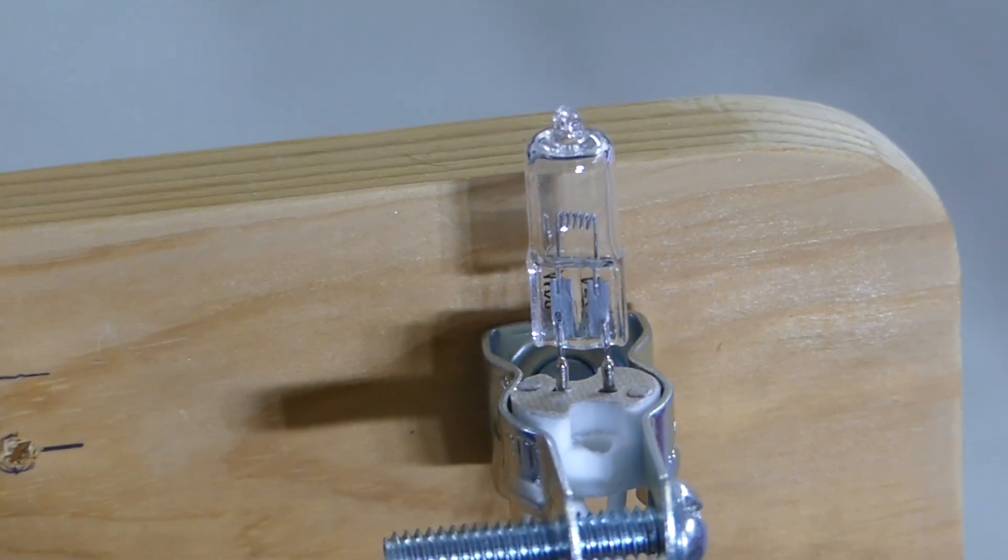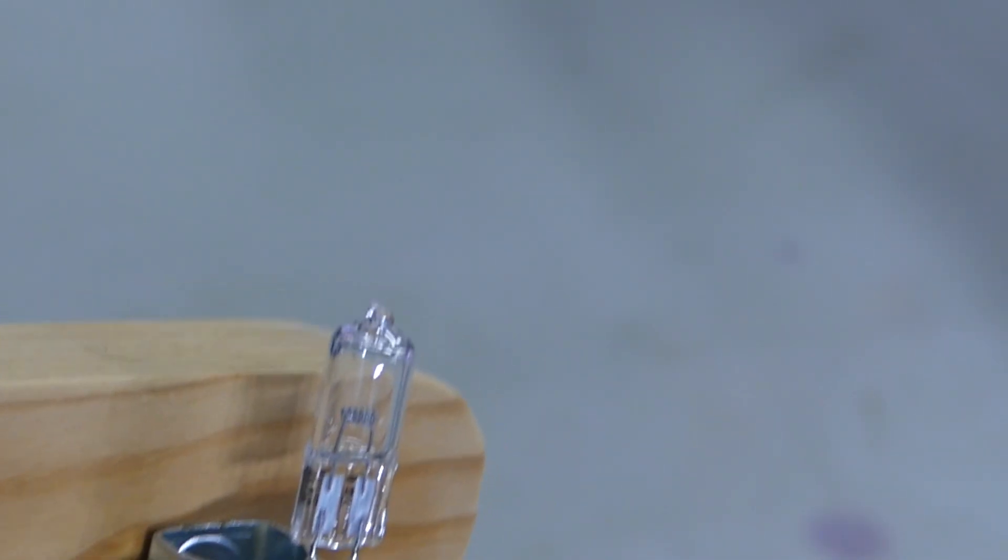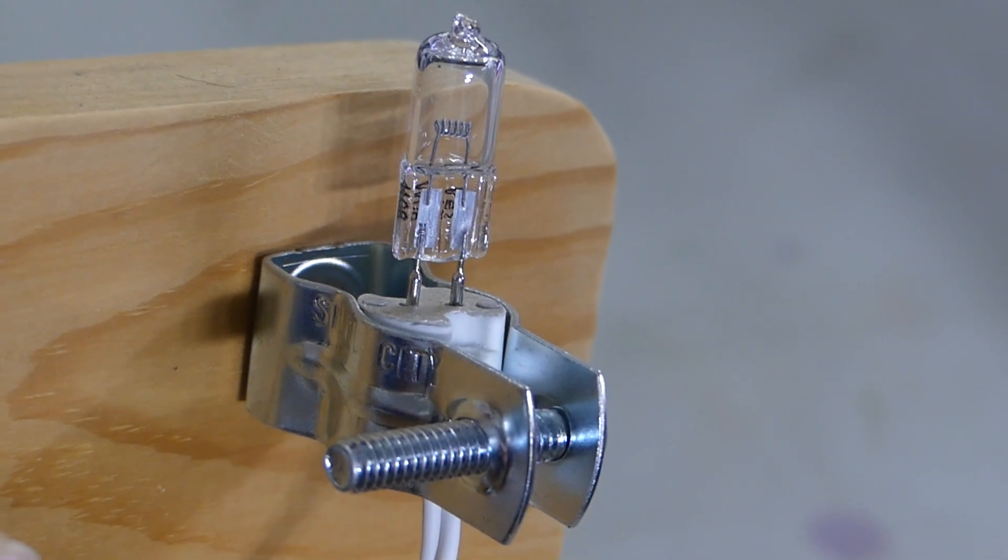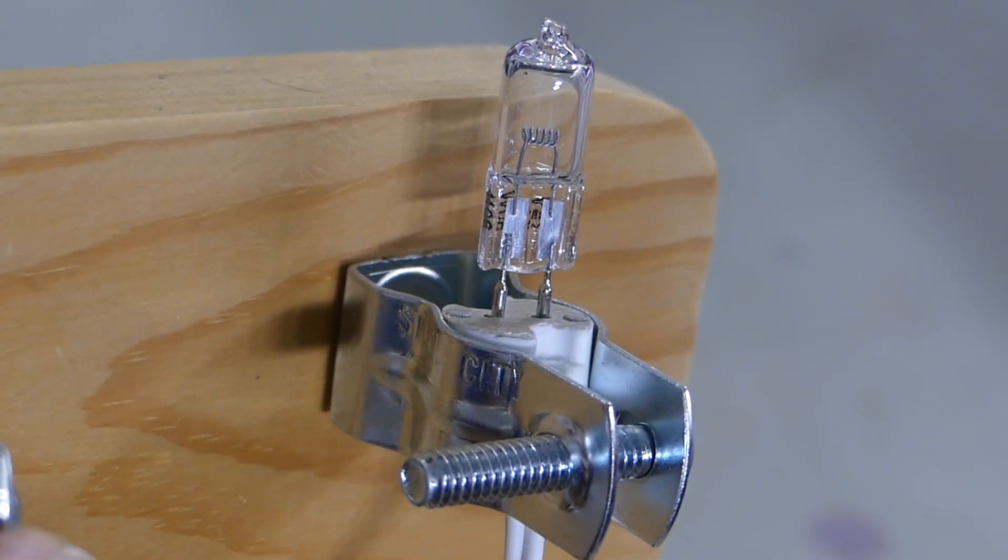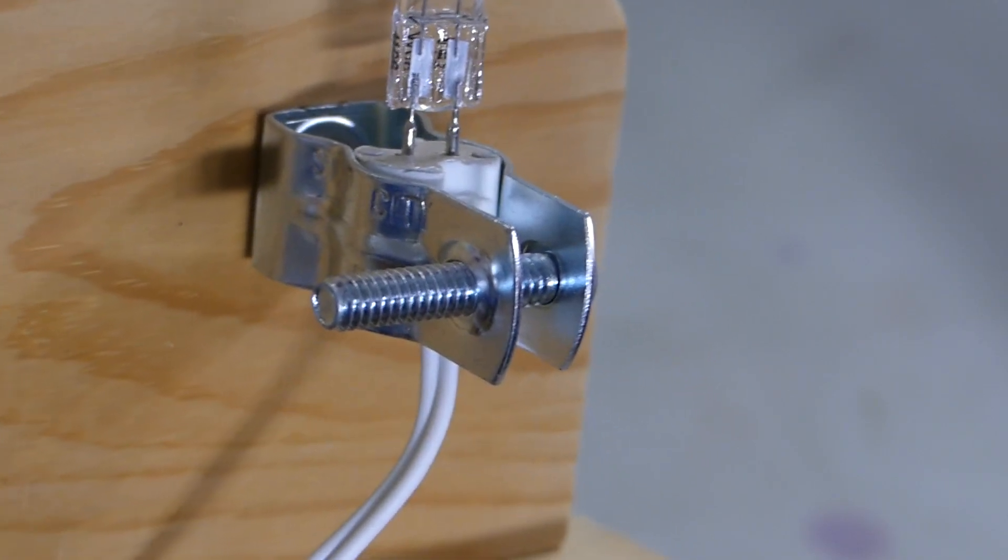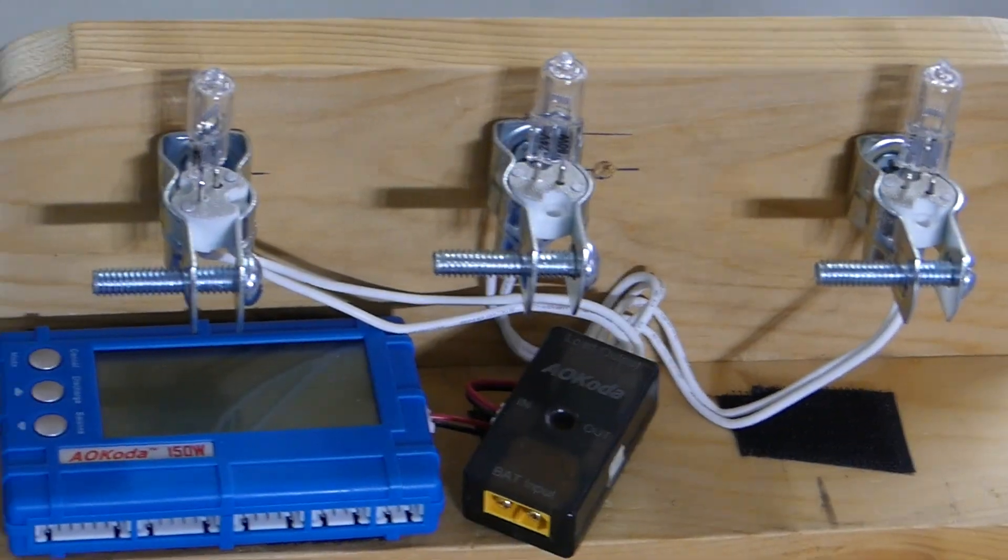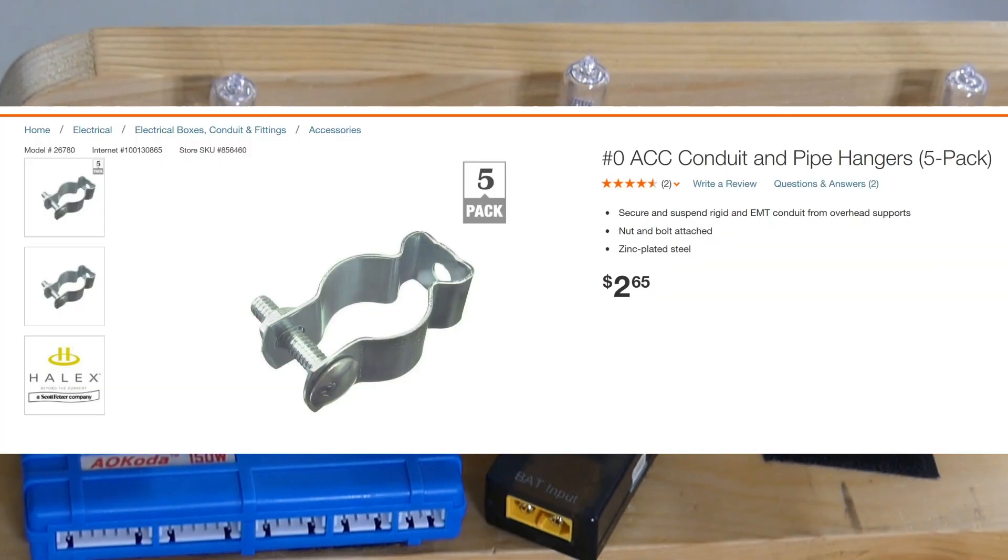It gets hot enough to melt your flesh, so I picked up these little holders that you can see there. They're not very expensive, I got them from Home Depot, and they were probably three bucks or so for a package of four. The bulbs, by the way, are 12 volt, and so that's one of the things you'll need. Then I just screwed them to a couple of pieces of scrap lumber that I had here at the house.